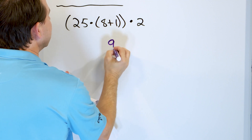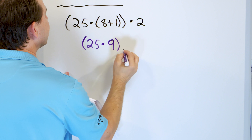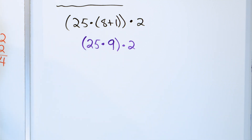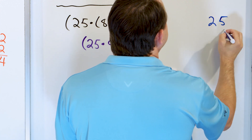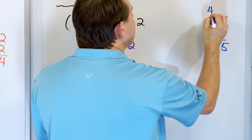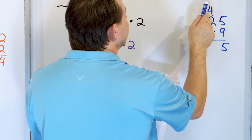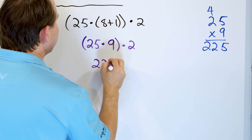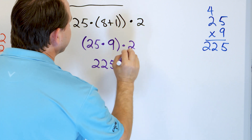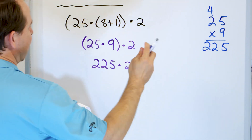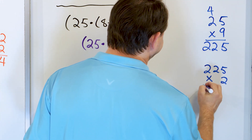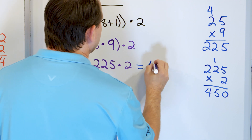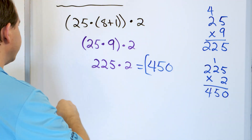The 8 plus 1 becomes a 9. I still have to multiply by 25, and then there's the outer parentheses. What is 25 times 9? 9 times 5 is 45, carry the 4; 9 times 2 is 18, plus 4 is 22. So 25 times 9 is 225. Inside those parentheses is 225, and I drop them. Now I have to multiply by 2. 225 times 2: 5 times 2 is 10, carry the 1; 2 times 2 is 4, plus 1 is 5; 2 times 2 is 4. The answer is 450. That's the final answer.